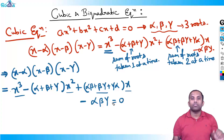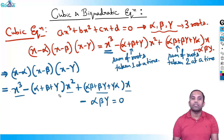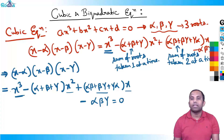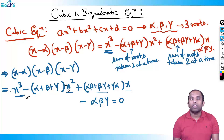So just get this fundamental understanding of how to write this. x·x·x = x³, minus sign, then x² with coefficient being the sum of roots taken one at a time: α+β+γ. After minus sign comes plus sign, and the power keeps decreasing.